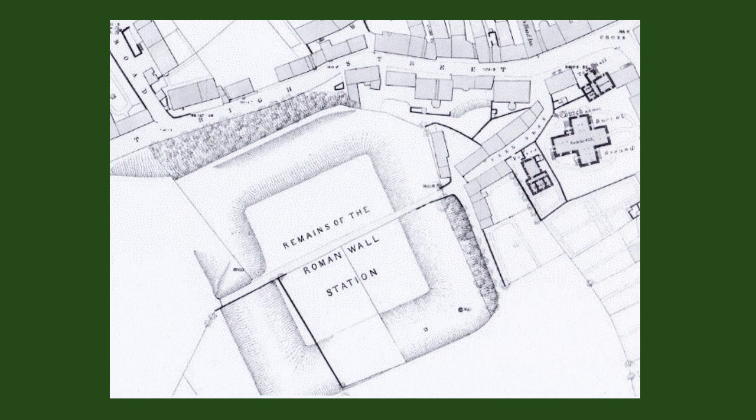However, Skinner's view was not shared by the surveyors working on the first edition of the Ordnance Survey map, published in 1864. The map describes the Peel simply as remains of the Roman Wall station. However, in 1899, an excavation confirmed that the high mound in Peel Park was the turfed over remains of a medieval castle.